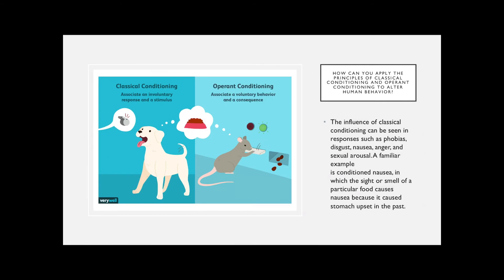How can you apply the principles of classical conditioning to alter human behavior? The influence of classical conditioning can be seen in responses such as phobias, disgust, nausea, anger, and sexual arousal. A familiar example is conditioned nausea, in which the sight or smell of a particular food causes nausea because it caused stomach upset in the past.